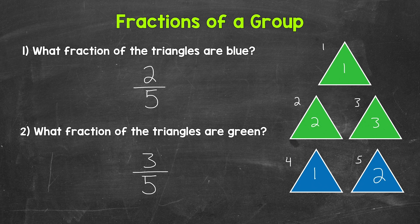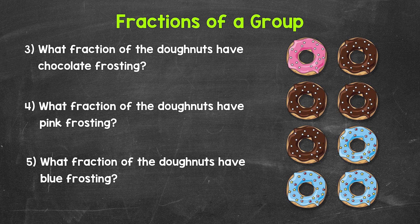Let's try a few more examples and move on to numbers 3 through 5. Taking a look at numbers 3 through 5, we're going to be working with a group of donuts here. Let's start with number 3 where we have what fraction of the donuts have chocolate frosting. Let's start with the denominator. So we need to figure out how many total parts make up the whole group, how many total donuts make up the whole group.